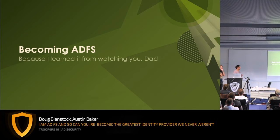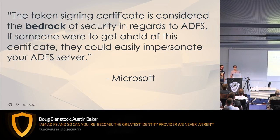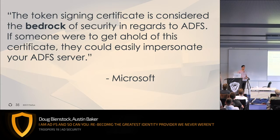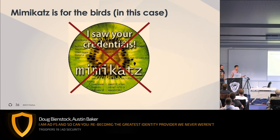When I first started looking into this, my existing research in Office 365 led me to a really nice quote by Microsoft: 'The token signing certificate is considered the bedrock of security in ADFS. If someone were to get a hold of this certificate, they could easily impersonate your ADFS server.' We know the token signing certificate digitally signs our security tokens and that relying parties like Office 365 only verify that digital signature. These certificates are stored in the ADFS server service account's certificate store — you could simply use Mimikatz to export the certificate. But I decided to go deeper and do away with Mimikatz.